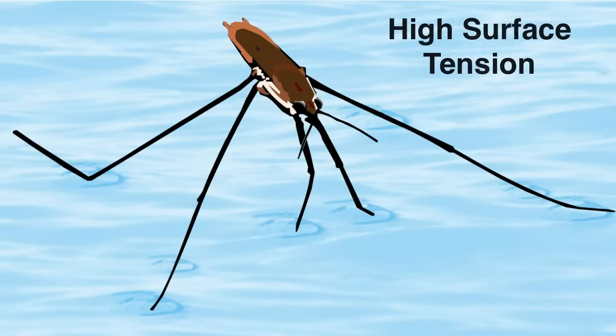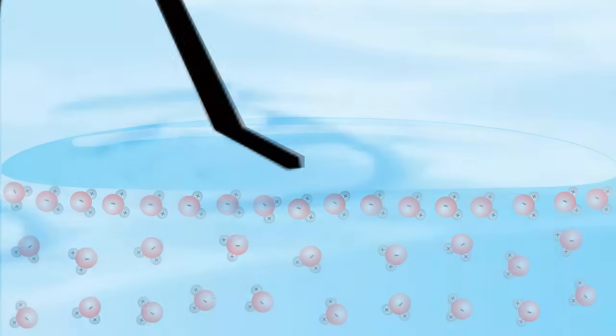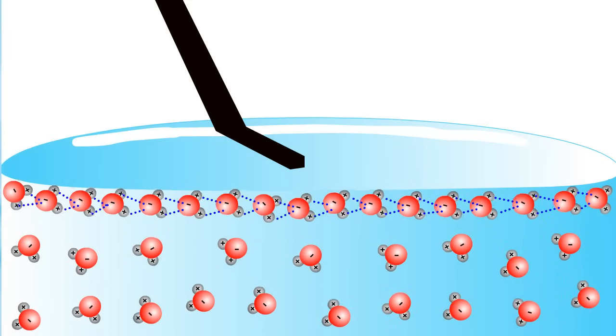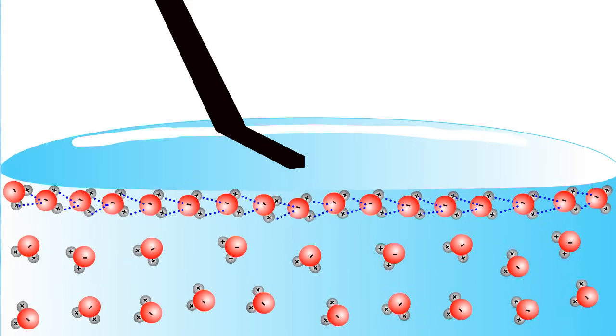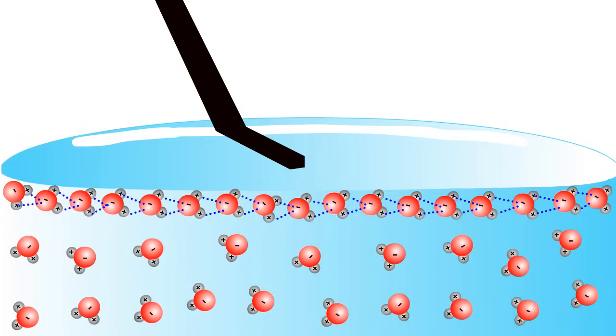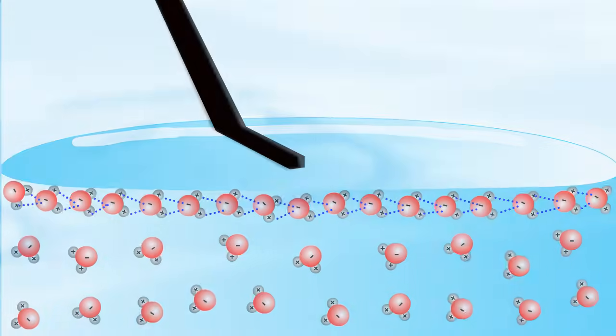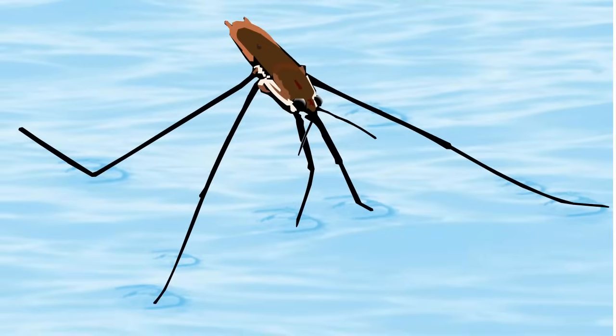Water also has a high level of surface tension. Because water molecules at the surface are more strongly attracted to each other than to the air above, water molecules cling tightly to each other. The surface tension of water explains why it beads up on waxy surfaces and why water-striding insects are able to walk on the surface of water.